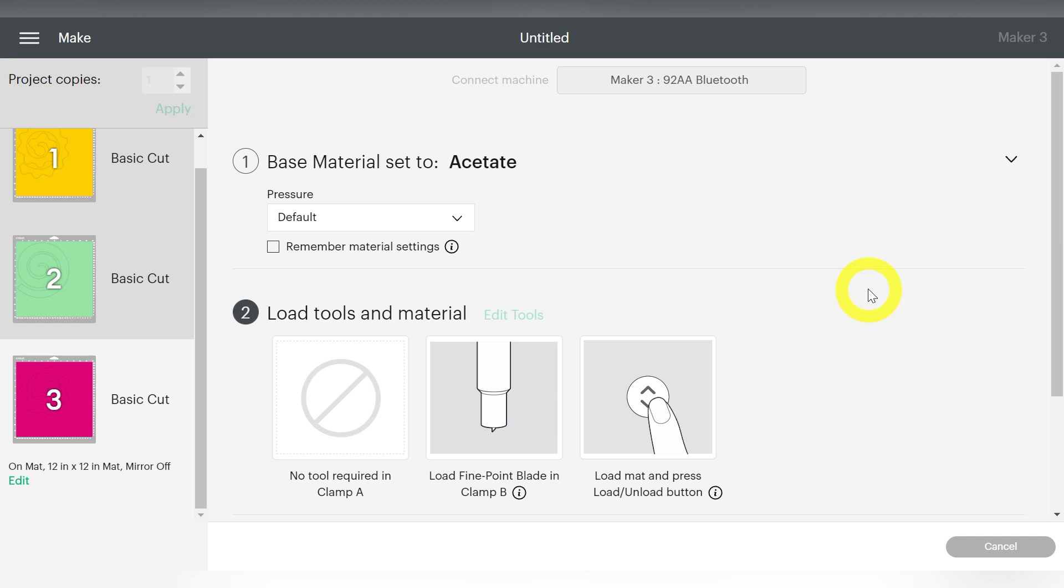Whereas Cricut Design Space takes care of that for us, it automatically has the pressure set, and it also has three passes. The Silhouette Cameo users, you guys don't have a preset. And that's okay, because we have tried it for you, and that Cardstock Textured at two passes should work just fine.